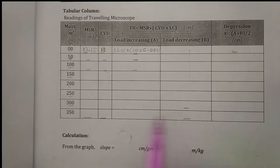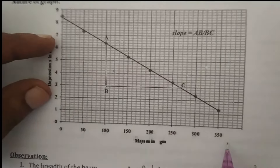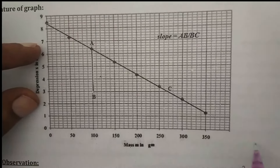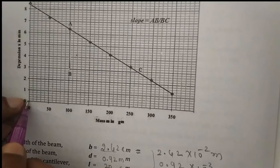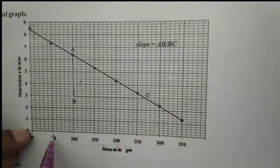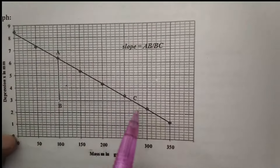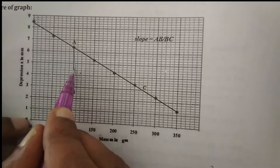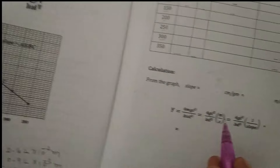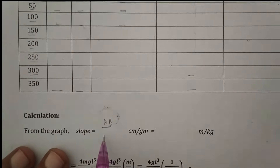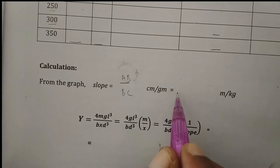Once we find the depression as a function of mass, plot the graph of depression versus mass. Along the x-axis: 0, 50, 100, 200 grams and so on; along the y-axis: depression values. Plot the corresponding points. From this plot, find the slope as AB divided by BC. Note the values of AB and BC and substitute to find the slope.